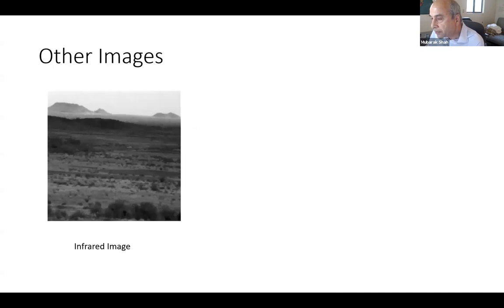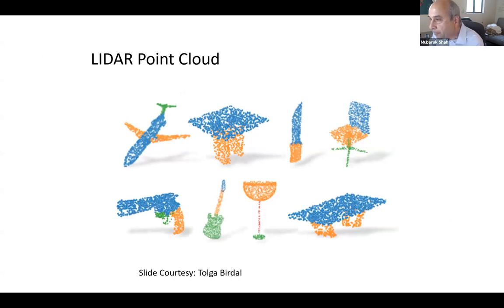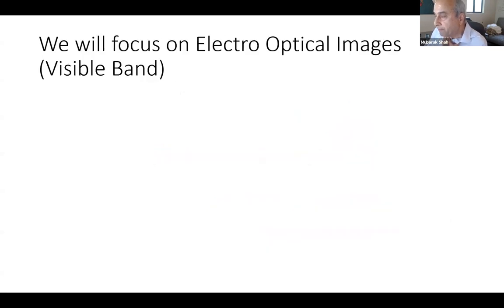So far we have been talking about electro-optical images — images taken by visible light, like a regular camera. But there are other types: infrared images, which can determine temperature and work at night; depth images, where the pixel value is the distance from the camera to the object; and LiDAR — light detection and ranging — like radar but using light, which gives you 3D information directly. We will focus on visible band electro-optical images.